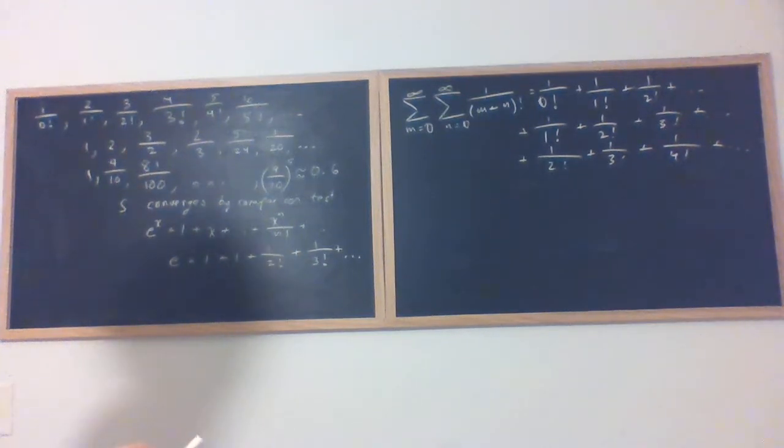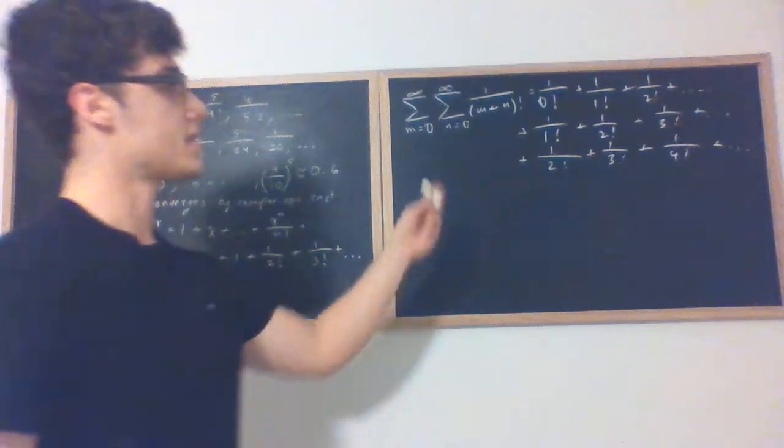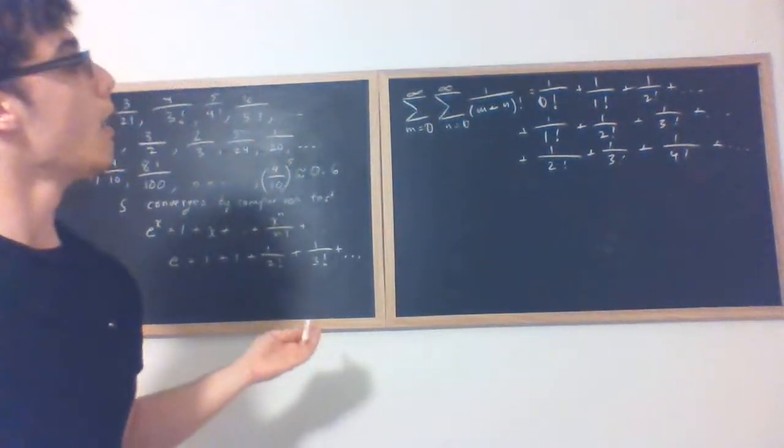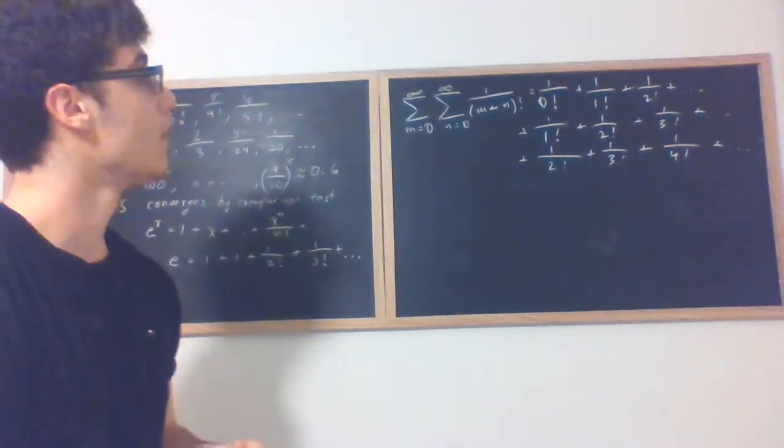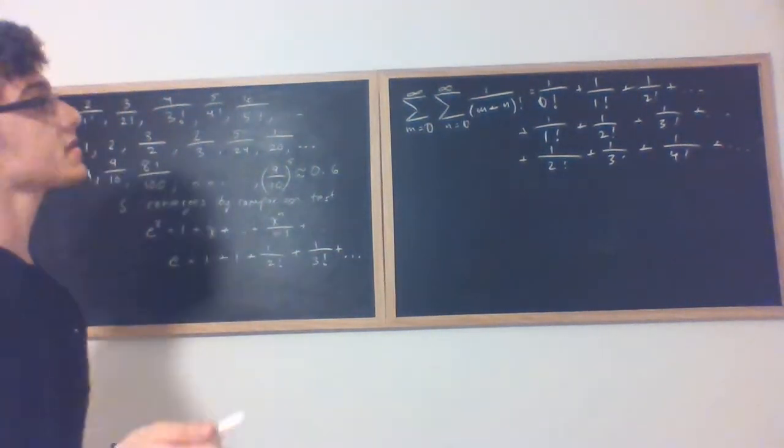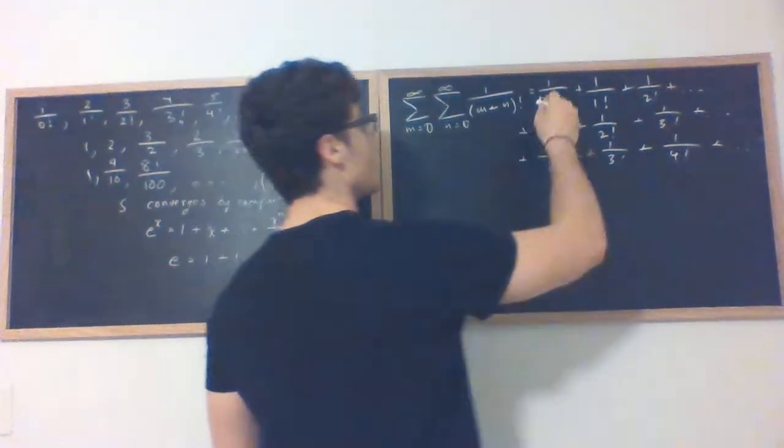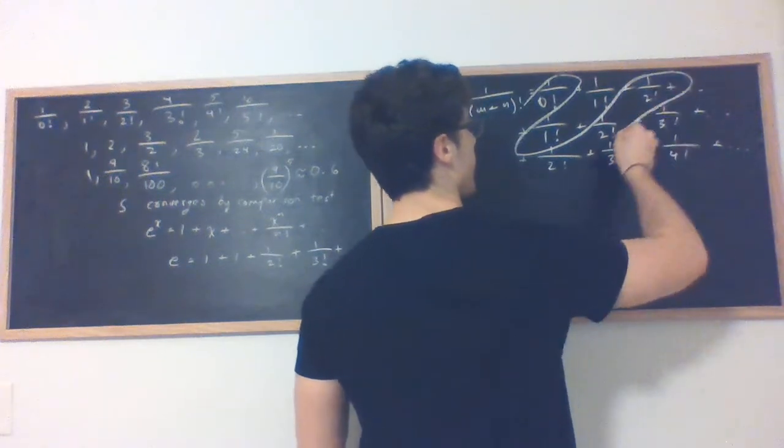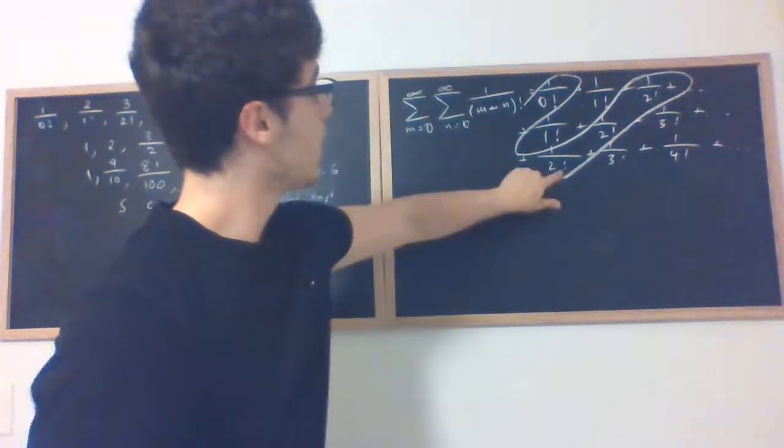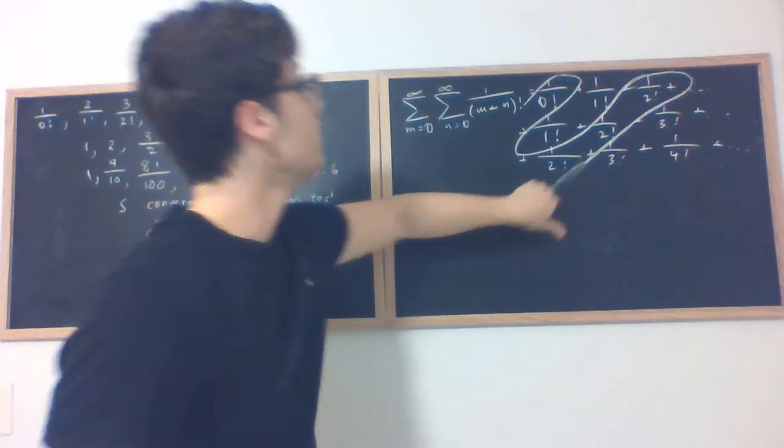So how are we going to attack this? Obviously it's going to have something to do with e and we have this grid of sums. You might be tempted to add horizontally or vertically, but we're going to be a bit clever with how we do this. We're actually going to add diagonally. So we're going to add along the lines of this sort of snake.